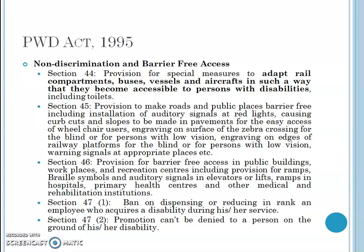Section 45 also requires curb cuts and slopes to be made in pavements for easy access by wheelchair users, engraving on the surface of zebra crossings for the blind or persons with low vision, engraving on edges of railway platforms for the blind or persons with low vision, and warning signals at appropriate places — all to ensure that people with disability have barrier-free access to various public places.